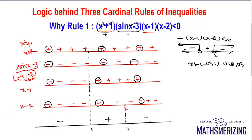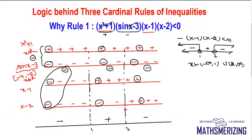What's happening here is: if I multiply the first two expressions, plus into minus will always be minus. Minus into minus into minus is minus; minus into plus into plus is plus; and minus into plus into plus is minus. So effectively, these two expressions do not contribute to sign change other than this overall minus sign. That is the reason we remove expressions that don't change sign in Rule 1.